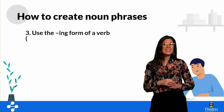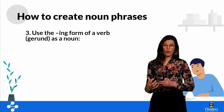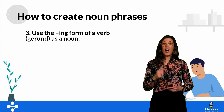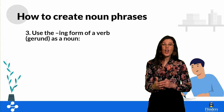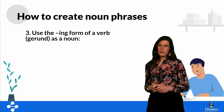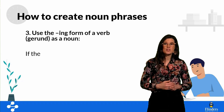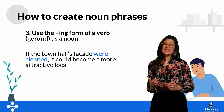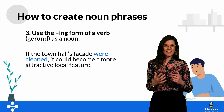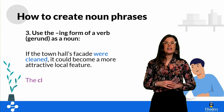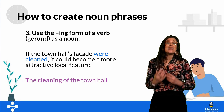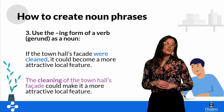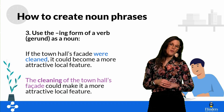The third way is to use the gerund form of the verb — the form with '-ing' on it — when turning a verb into a noun. So 'if the town hall's facade were cleaned, it could become a more attractive local feature' might become 'the cleaning of the town hall's facade could make it a more attractive local feature.'